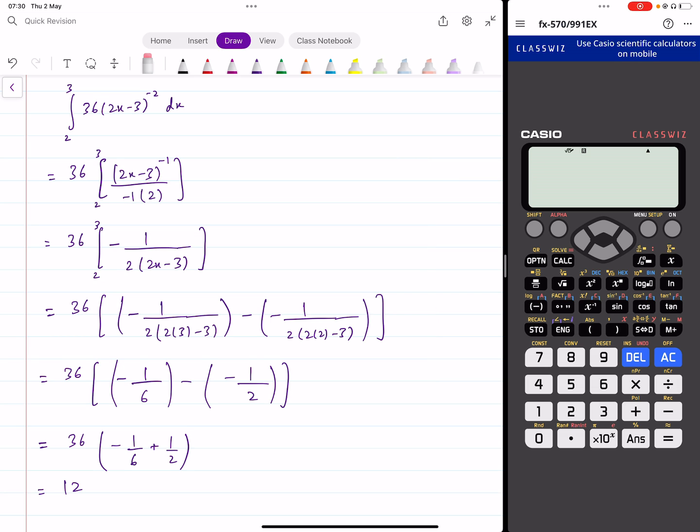So how do you verify this if you want to do this? You have this integration button. Again, the same button, the top right, second button from top right. Let's input that function here. 36 multiplied by 2x minus 3 whole raised to power negative 2.